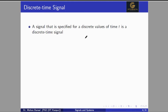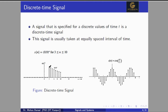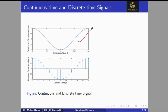A discrete time signal is specified for discrete values of time t. The signal is usually taken at equally spaced intervals of time. Here you can see that the signal is defined at equal intervals of time and is not defined between those two time periods — this is a discrete time signal. We can obtain a discrete time signal from a continuous time signal by sampling, i.e., by discretizing the continuous time signal. The right hand side figure shows a discrete time cosine signal defined at integer values of n. The lower signal is a discrete time sinusoidal signal obtained by taking samples at some interval.